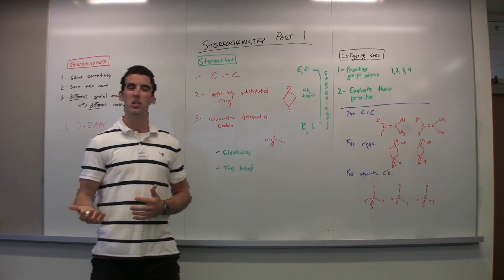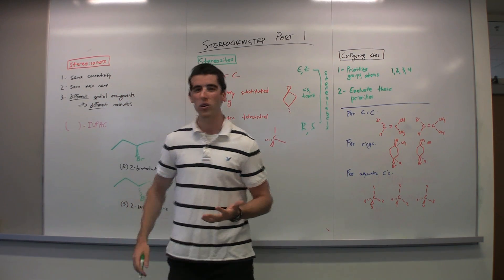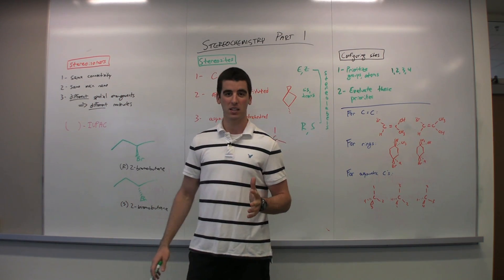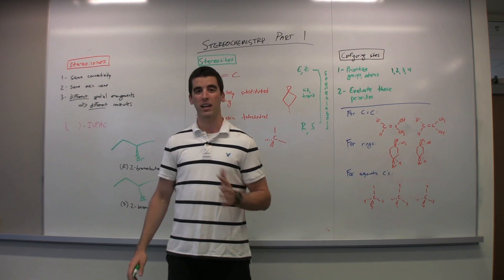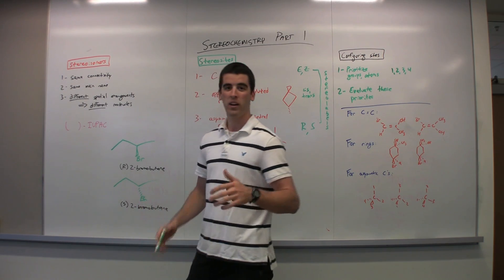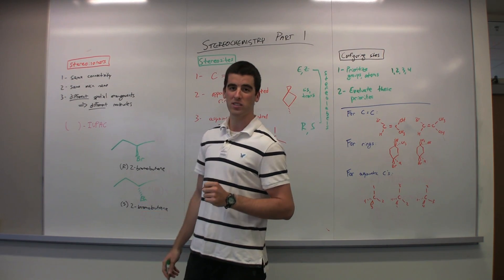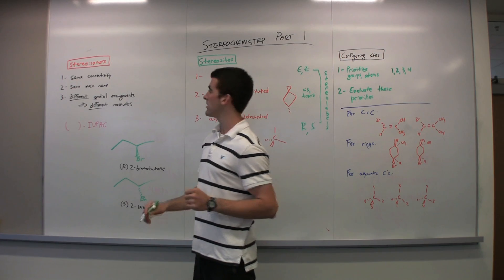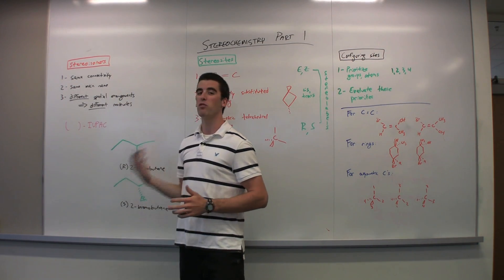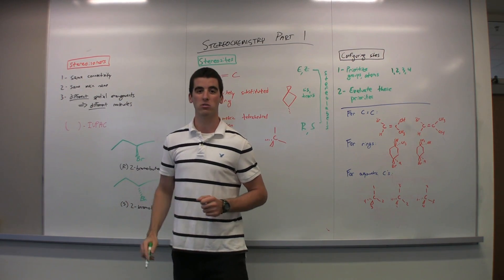So when we talk about stereochemistry, what do we mean? Stereochemistry refers to specific sites in a molecule that can have options for different configurations, and those specific sites are known as stereosites. Another important term is stereoisomers, which refers to molecules that have stereosites.